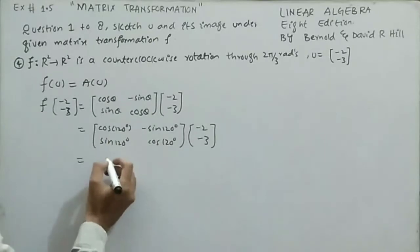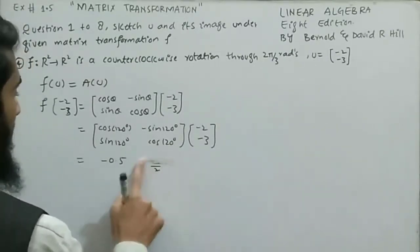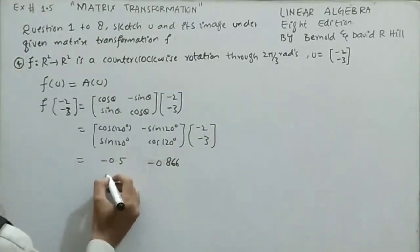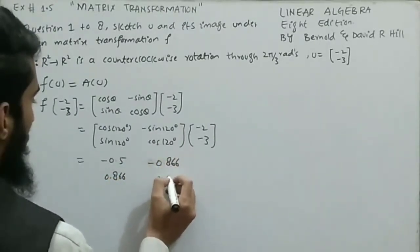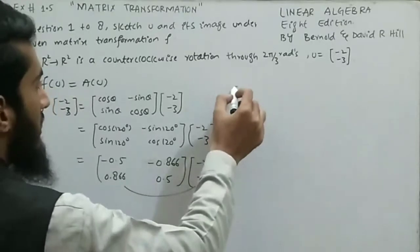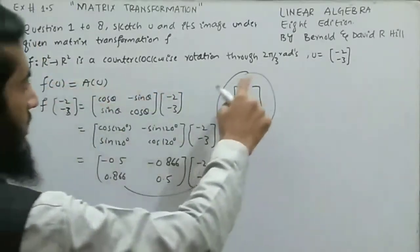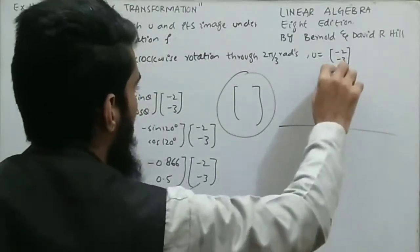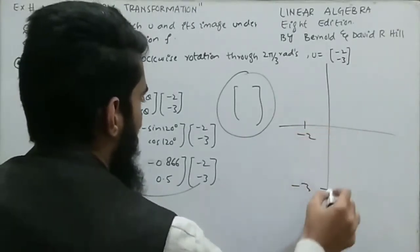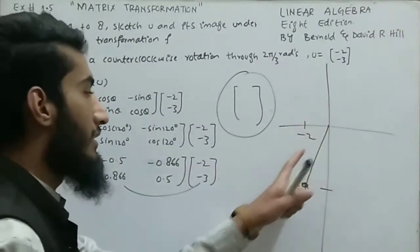Substituting: cos 120° = -0.5, sin 120° = √3/2 ≈ 0.866. So A = [[-0.5, -0.866],[0.866, -0.5]] multiplied by u = (-2,-3). Multiplying these matrices gives the required image for question 4. For the sketch, u = (-2,-3) is plotted at x=-2, y=-3, and the computed image is drawn to complete the required sketch.